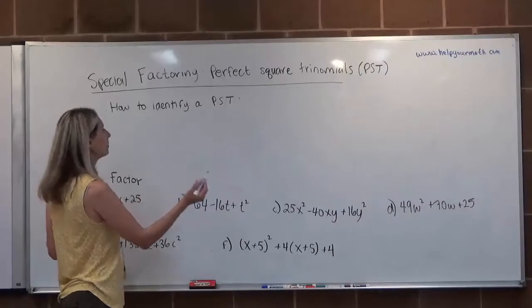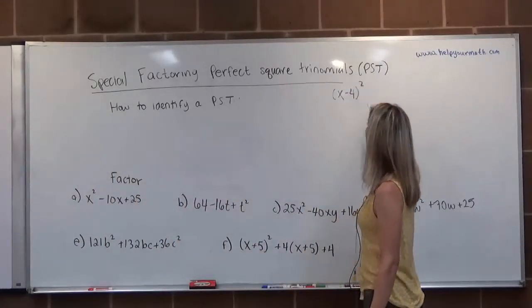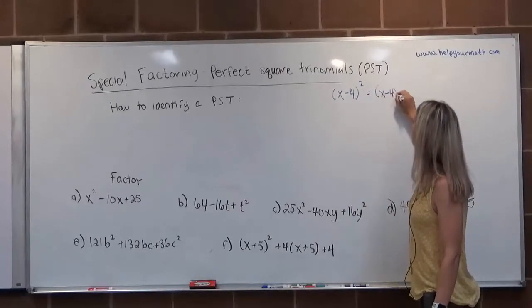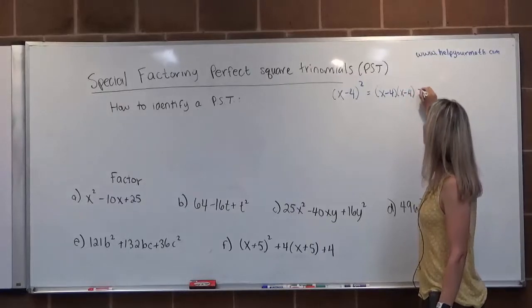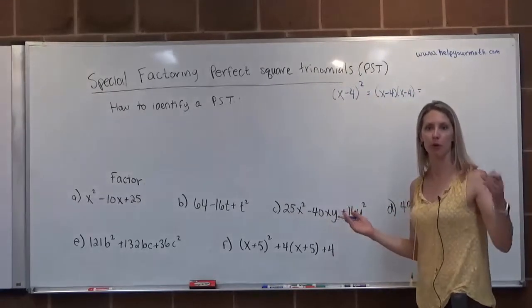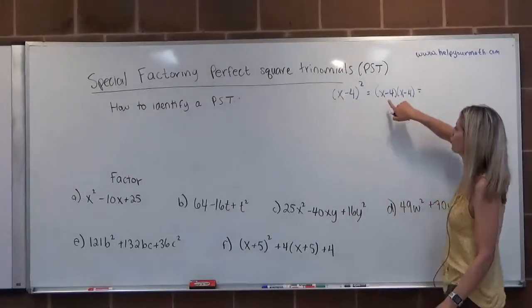A perfect square trinomial could be something like x minus 4 quantity squared. Because if we were to multiply this out, that would be x minus 4 times x minus 4, the product of this thing will be a perfect square, because a perfect square is something that has a rational root, and this hypothetically is rational.